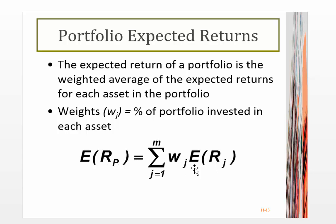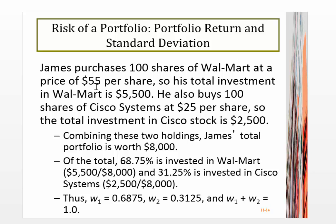The portfolio return is just the weighted product of the returns of its assets. We take the expected return calculated for individual assets and multiply by w, the weight — the proportion of money invested in each asset. For example, James purchases 100 shares of Walmart at $55 (total $5,500) and 100 shares of Cisco at $25 (total $2,500), giving a total portfolio of $8,000. Walmart's weight is 5,500 / 8,000 = 68.75%, and Cisco's weight is 2,500 / 8,000 = 31.25%, and they add up to 1.0.